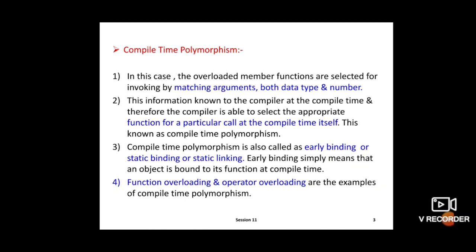Compile time polymorphism is called early binding because this process comes before runtime, and an object is bound to its function at compile time. It is also called static binding or static linking. Function overloading and operator overloading are examples of compile time polymorphism.